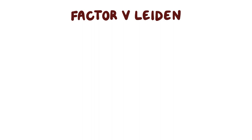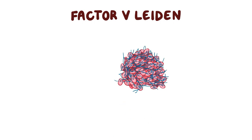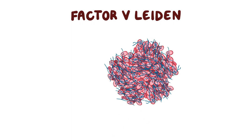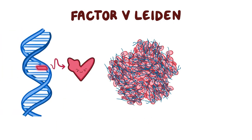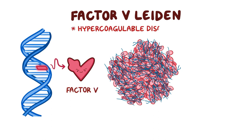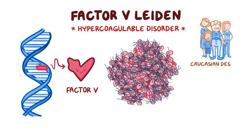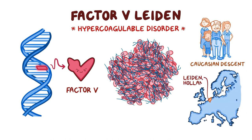Factor V Leiden is a disorder where blood clots form more easily due to a mutation in a clotting protein called Factor V. It is the most common hypercoagulable disorder in people of Caucasian descent, and was named after the town Leiden in Holland, where the disease was first described.